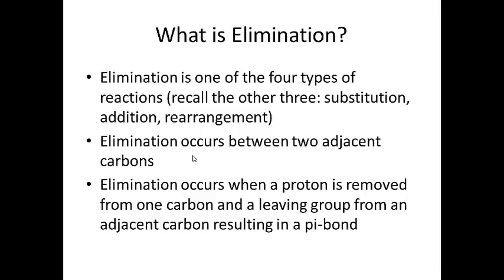If you remember from organic chemistry one, we talked about four different types of reactions: substitution, addition, rearrangement, and elimination. Elimination happens between two adjacent carbons — on one carbon you remove a proton, and on the adjacent carbon you lose a leaving group, and when that happens a pi bond is the result.